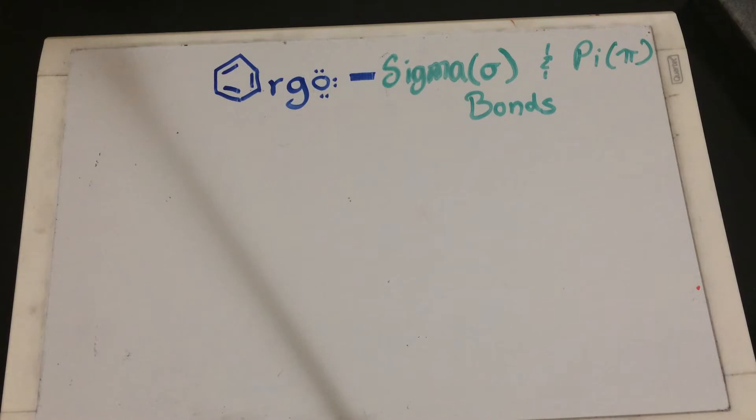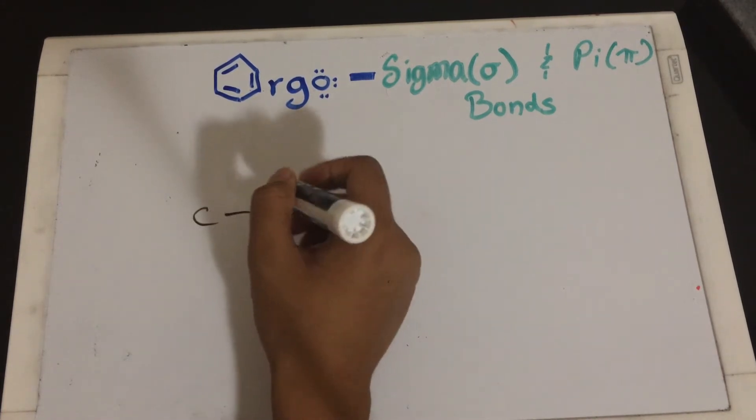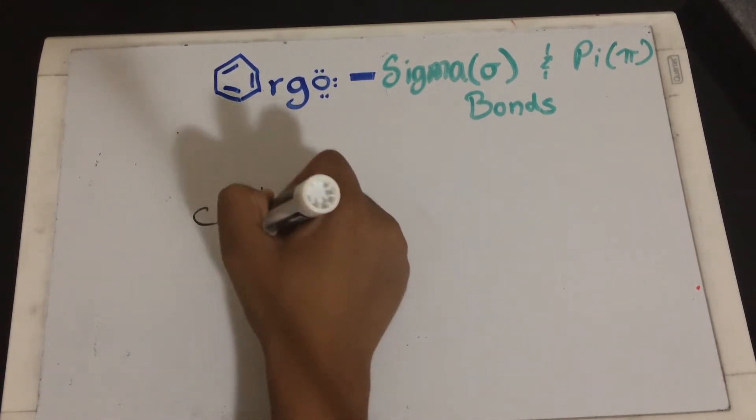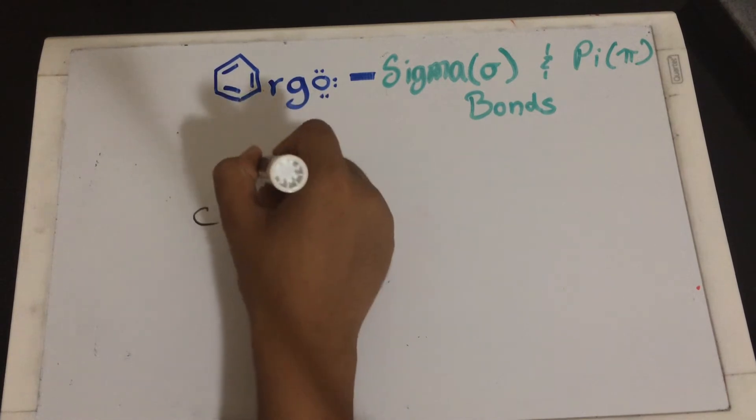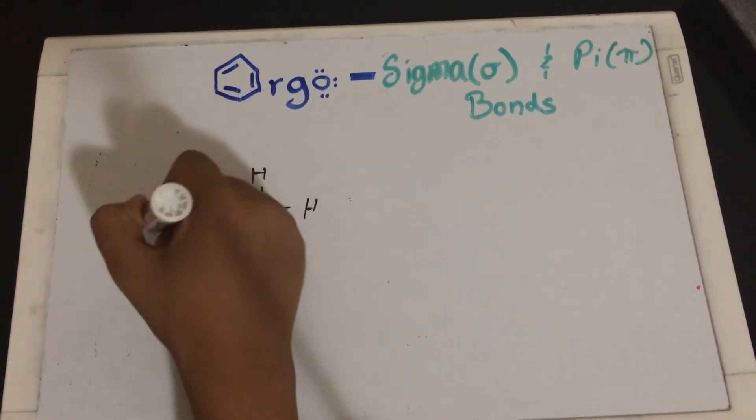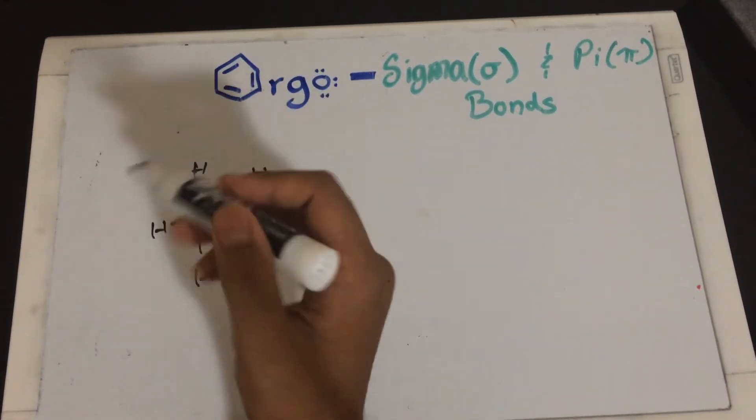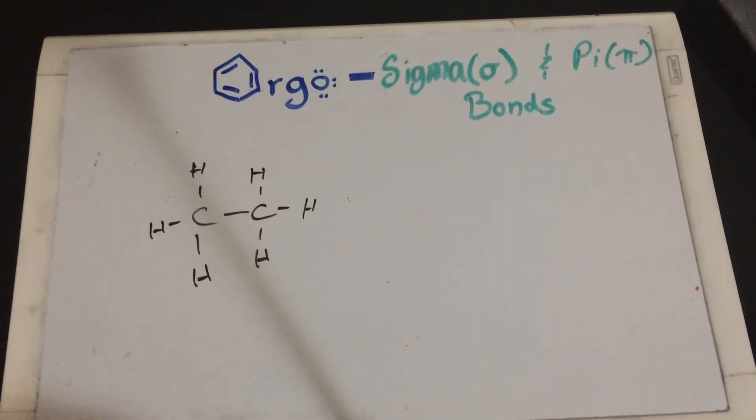So what is the whole idea behind sigma bonds and pi bonds? Well, if you look at, say, methane, I mean, not methane, ethane, where you have CH2, right? And you're asked, how many sigma bonds are there? How many pi bonds are there?